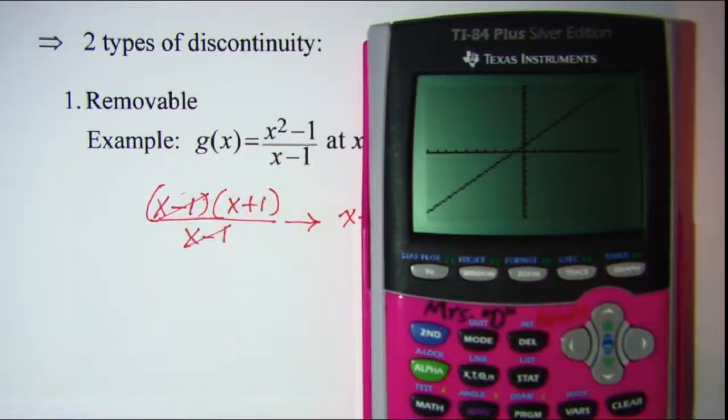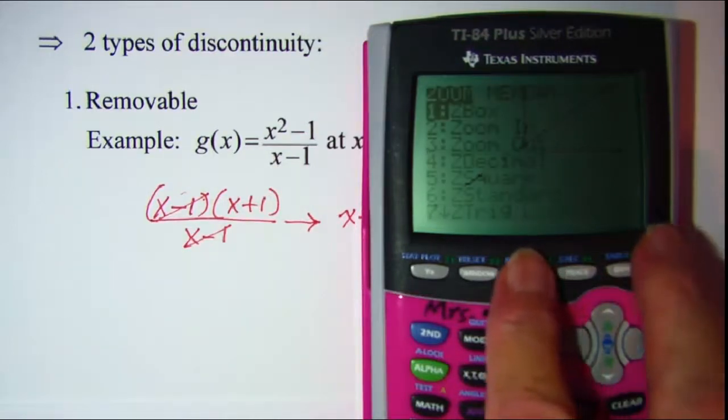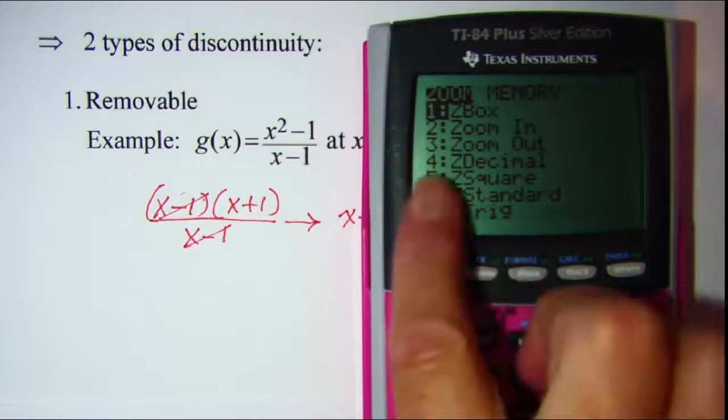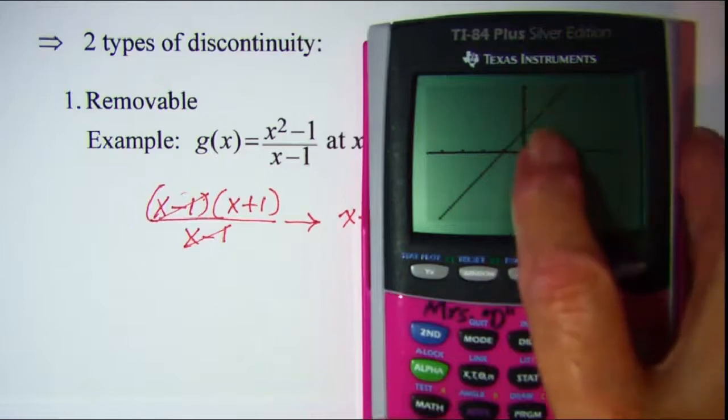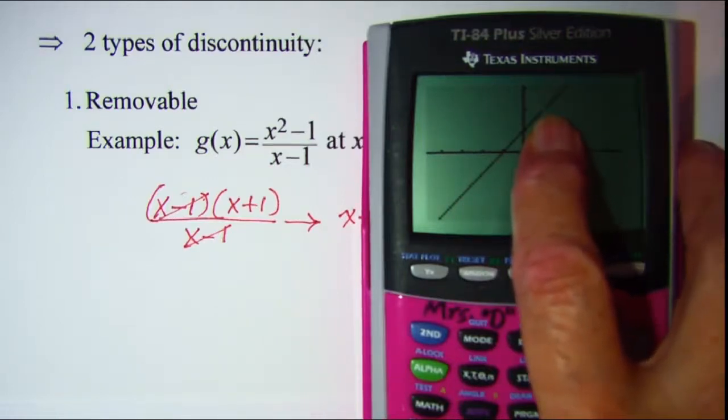So whenever we suspect that there's going to be a hole in the graph we need to do a zoom decimal, so zoom 4, and we can see right here then that there is obviously a hole in the graph when x is equal to 1.